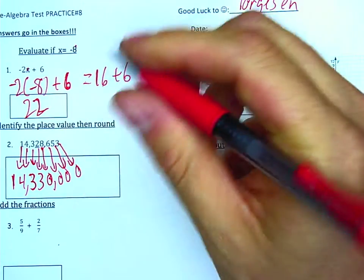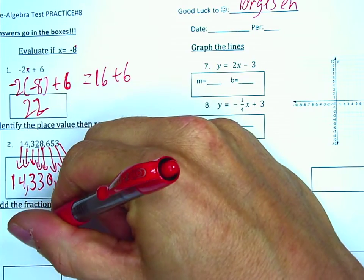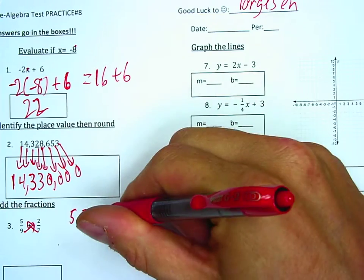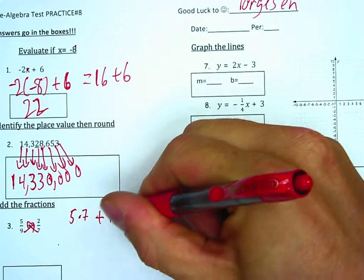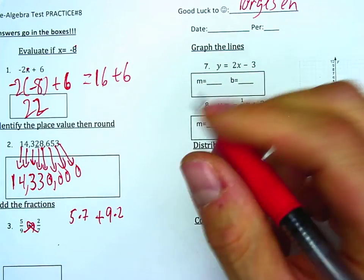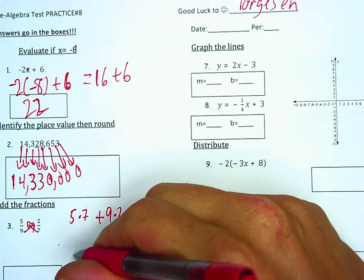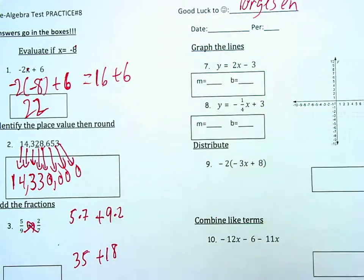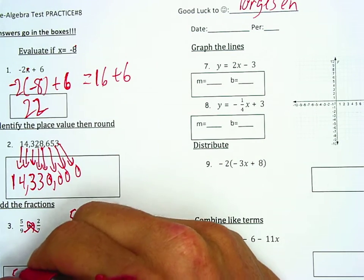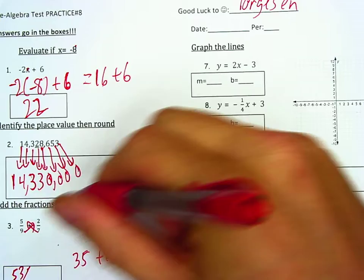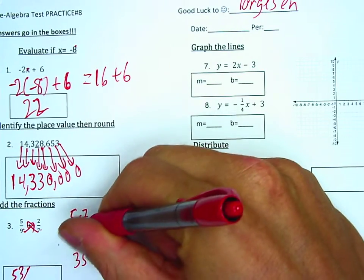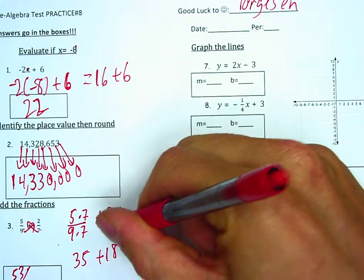Question 3. We're going to diagonally multiply 5 times 7 and 9 times 2, after which we will add them together. So that will be 35 plus 18, which will equal 53. The denominator here is going to be the product of 9 times 7, the product of the two given denominators, which is 63.